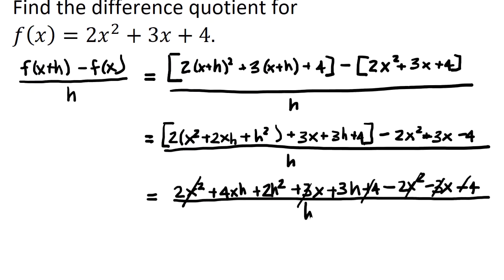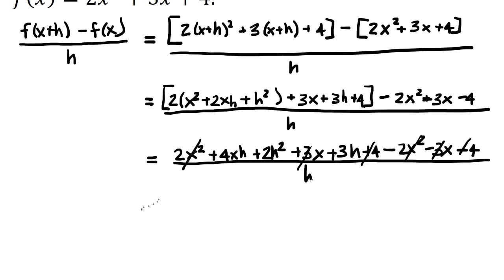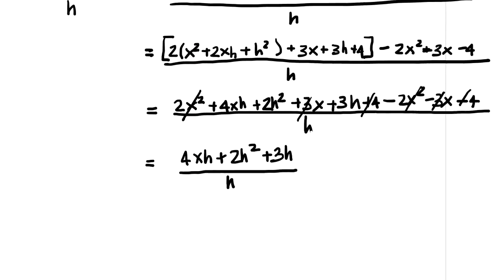And now what I need to do is continue to work this problem and I'm going to claim, I'm going to put an equal sign here and I'm going to write my simplified equation down. Now when I line up the equal signs that's indicating that I think the line above is equal to the line below. So I have 4xh plus 2h squared plus 3h all divided by h.